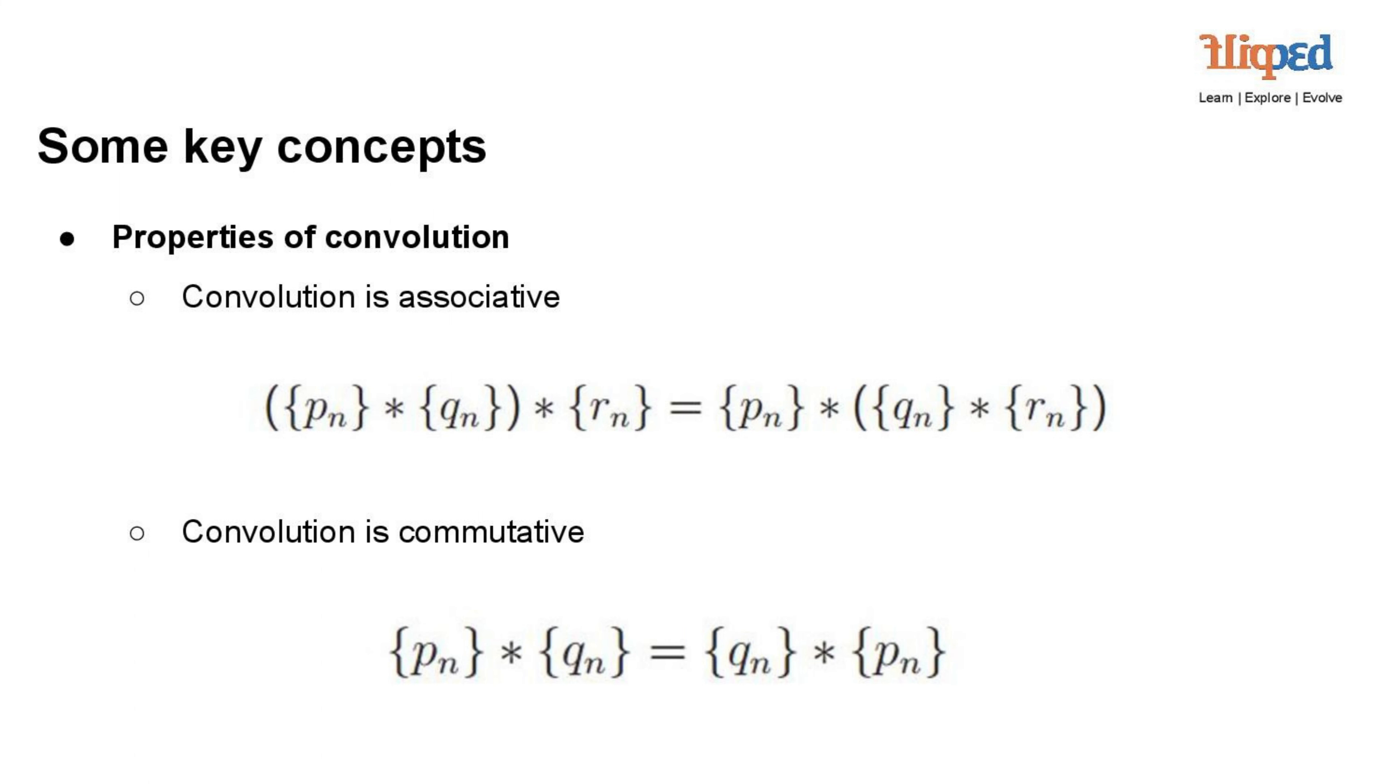p(n) into q(n) into r(n) equals p(n) into [q(n) into r(n)]. This property allows simplification and rearrangement of convolution operations in complex signal processing tasks.